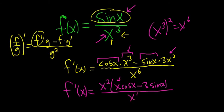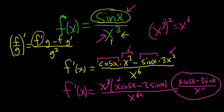On the bottom here, we have x to the sixth. And now, we lose two copies of x, so an x squared cancels, and that becomes a 4. So the final answer is x cosine x minus 3 sine x, all over x to the fourth. And that is the final answer. That's it.